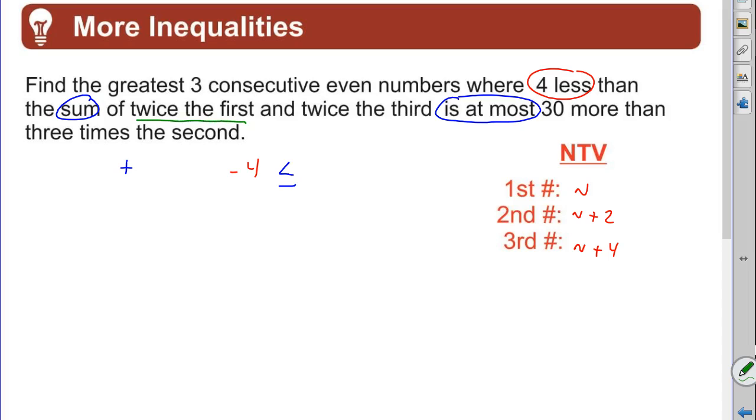It says twice the first. All right, so you have to multiply the first by two. What is our first number? Look at your NTV and it's N. All right, so there's twice the first and it goes on and twice the third. All right, so two times what? What's our third? Look in our chart. N plus four, you're going to need a parentheses there because it has to be twice the whole thing. The third is N plus four. Okay, left side. Good.